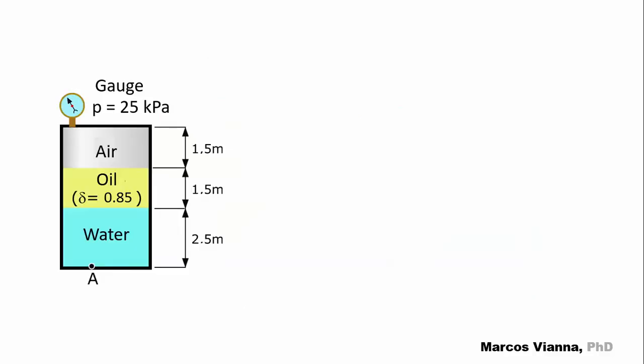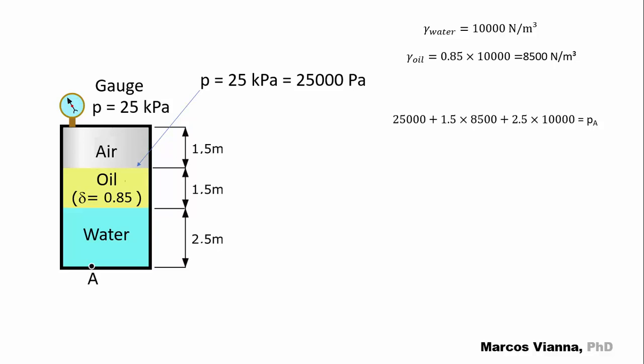Let's do another one. This figure shows a vessel containing three different fluids. There is also a gauge indicating the pressure at its top. What will be the pressure at its bottom? Piece of cake too! The specific weight of the air is negligible. So, we can assume that the pressure at the air-oil interface is the same shown by the gauge. If the specific weight of the water equals 10,000 newtons per cubic meter, then the specific weight of the oil will be 8,500 newtons per cubic meter. Now, we can write this relation and find the pressure that we wanted in pascals and in kilopascals.